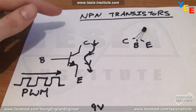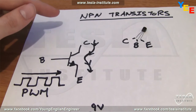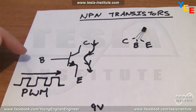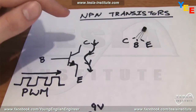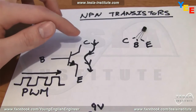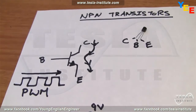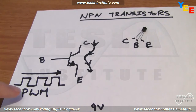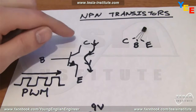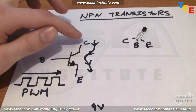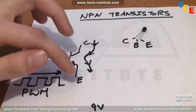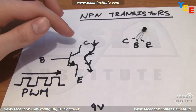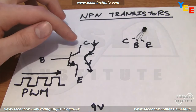On PNP transistors, the opposite of NPN transistors, it's the opposite — when the base goes low, current is allowed to flow from collector to emitter. In this project, we'll be sending a PWM or pulse width modulated signal into the base, which will change the amount of current flow that goes from collector to emitter and therefore change the speed of a motor hooked up to this transistor.